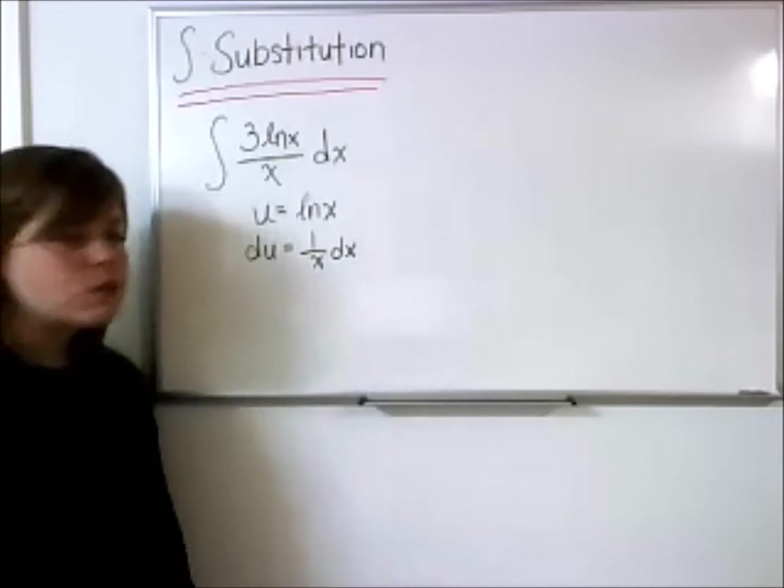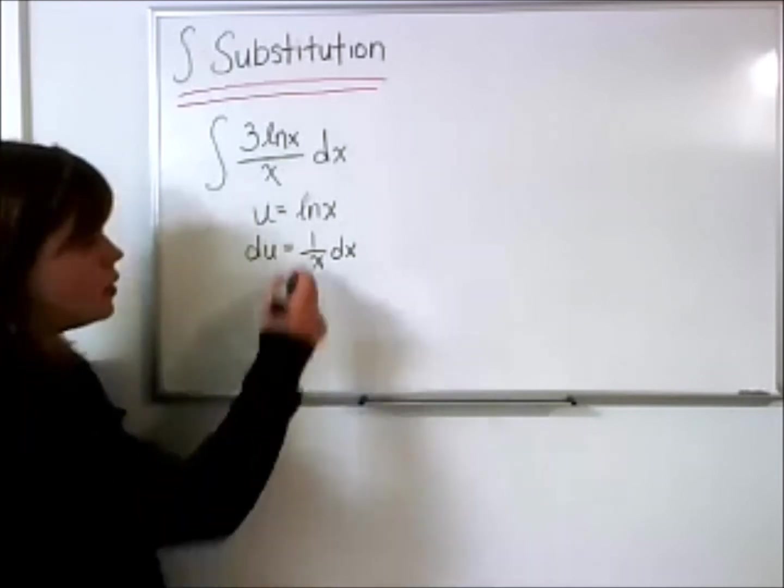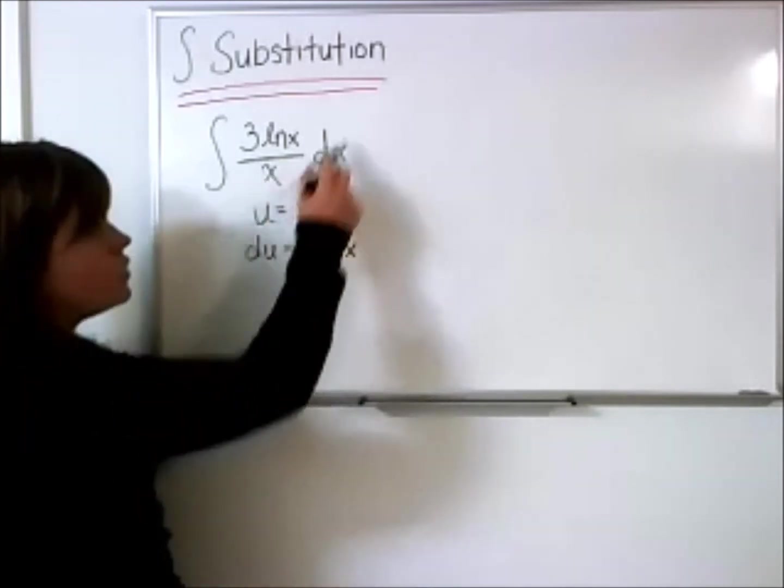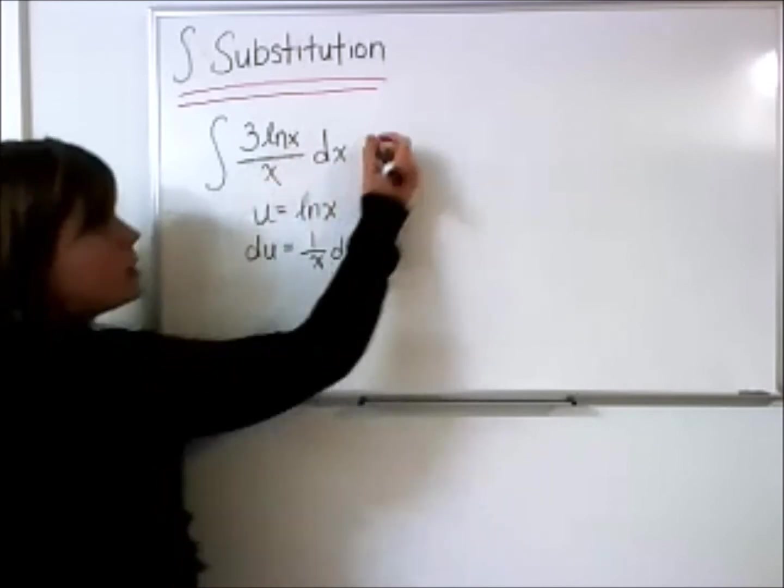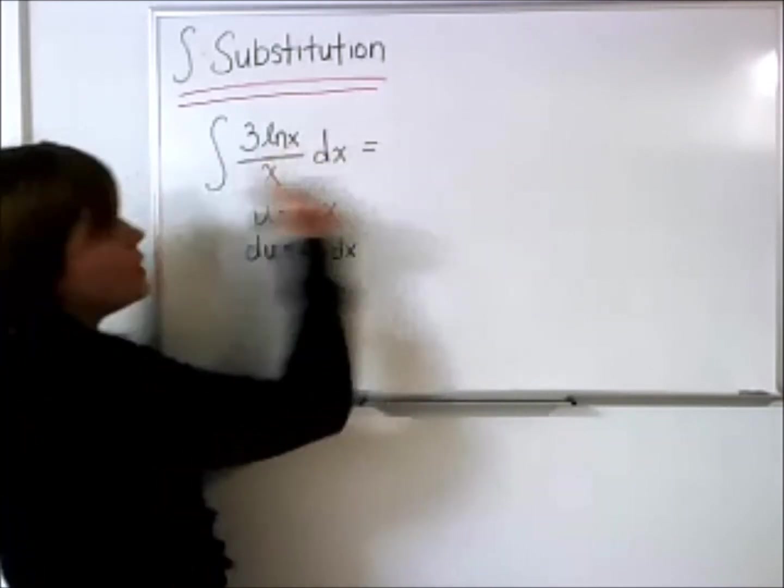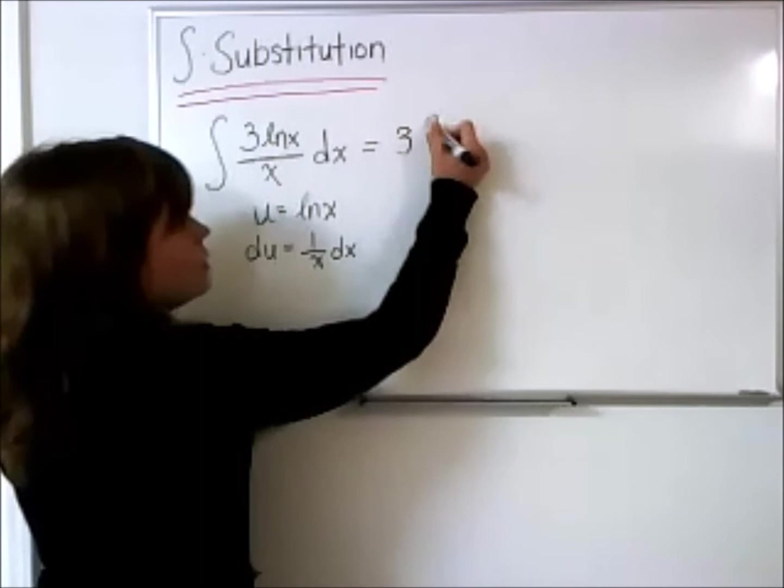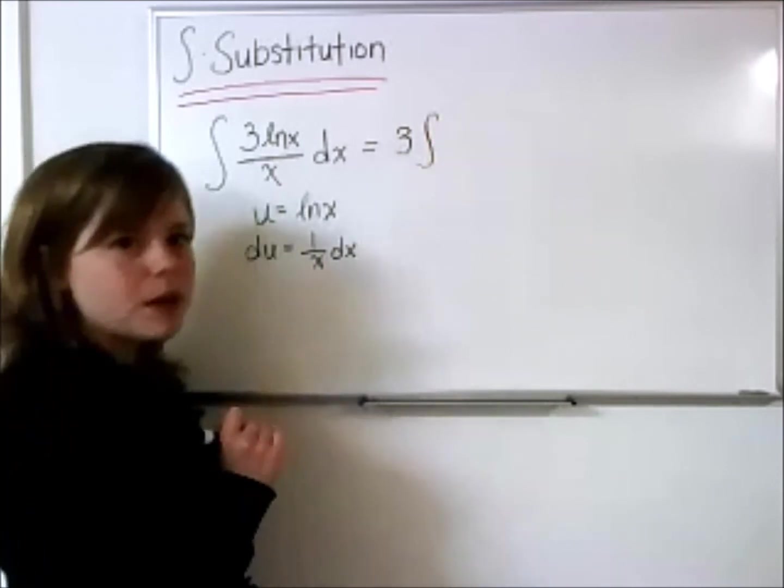Okay, this works out really nicely because this 1 over x is actually in our problem. So, if I rewrite the integral a little bit, I'll bring this constant outside, which we can do, just a property of integration,